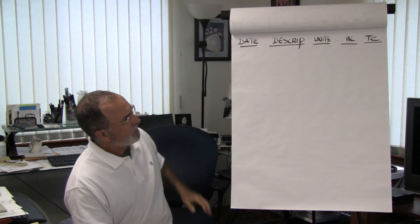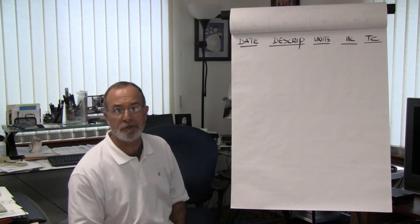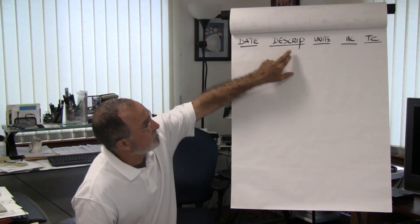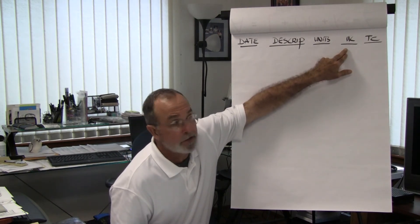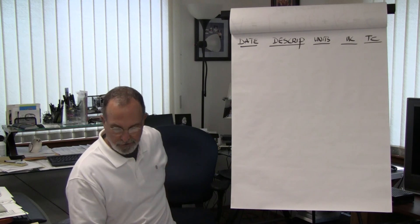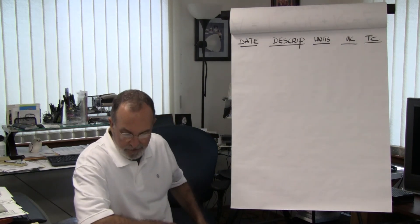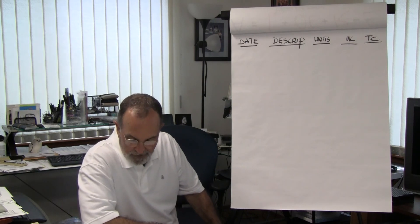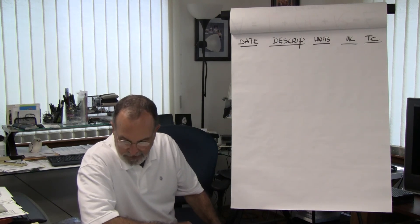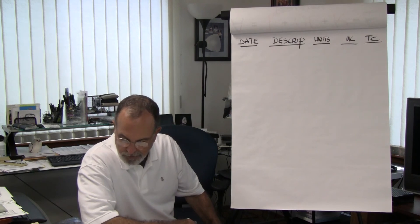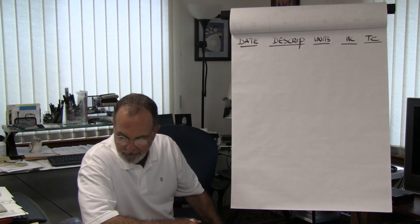I have a basic starting point up here, some headings across the top of the page. Date, the description, units. UC stands for unit costs and TC stands for total costs. And so, if we go back to E7-5, we'll do this first for FIFO and then for LIFO. And then if we have time, we'll do weighted average.